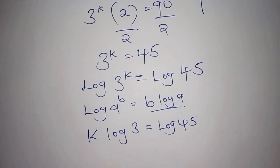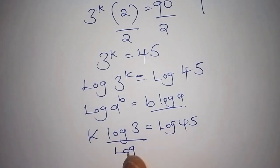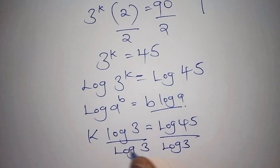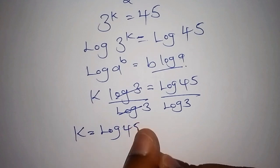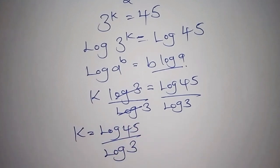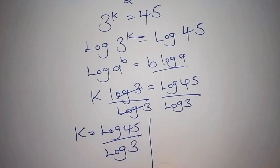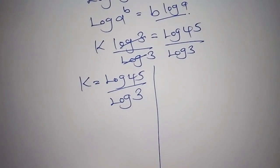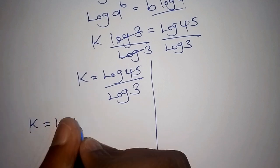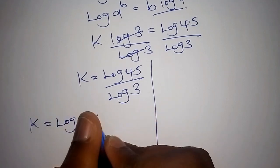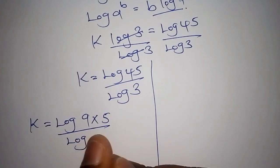We now divide both sides by log(3), so k = log(45) / log(3). We can factorize 45 further and write it as 9 × 5, giving us k = log(9 × 5) / log(3).